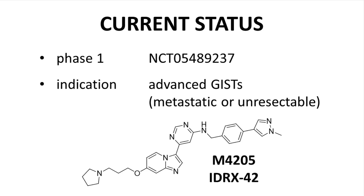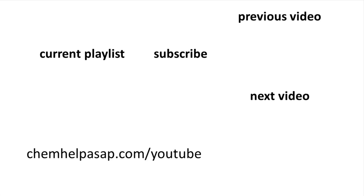Therefore, compound 32 — also known as M4205 or IDRX42 — has been advanced into early clinical trials for treatment of advanced GISTs. At the time of this video, according to clinicaltrials.gov, the study is currently enrolling patients. Thank you for watching this drug discovery story on M4205, an orally administered KIT inhibitor. A link to the original Journal of Medicinal Chemistry article is in the video description. Please consider subscribing to the channel, leaving a like, or making a comment. Take care.